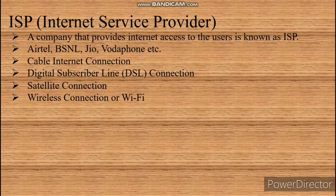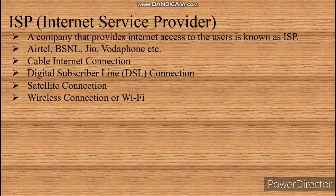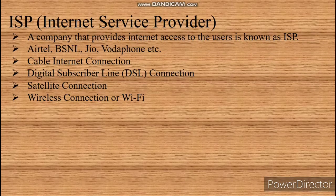When you register with an ISP for its services, an account is created and you are provided with login details — username and password. If you want to use the internet facility, you should register with the company. The company provides a username and password, and you connect to the internet by means of your account. This way the company keeps track of your internet usage.